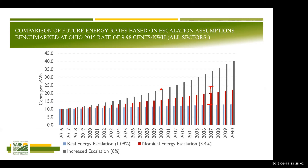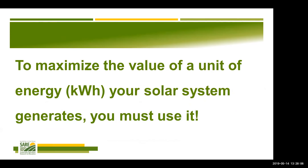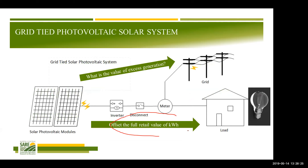The last takeaway is that if you use the electricity that you generate, it has the greatest value. To maximize that value, you need to use it — and sizing the system appropriately is the best way to do that. If you use more and don't send it to the grid, that guarantees the electricity is worth its full value. If economics are most important to you, size the system accordingly. If green energy matters most, it may be okay to give some to the grid to offset your entire load.